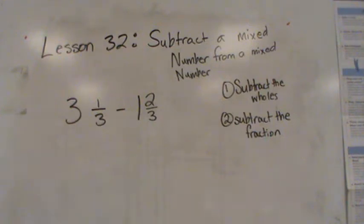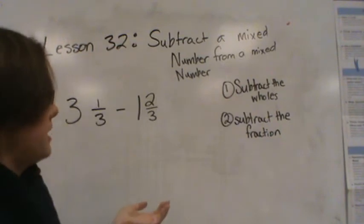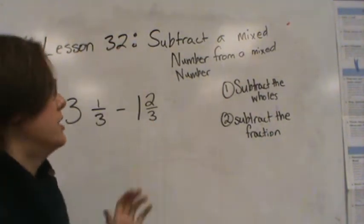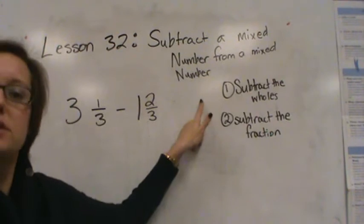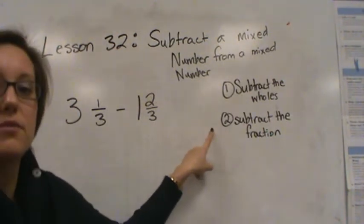Lesson 32, we are going to be subtracting a mixed number from a mixed number. And just like we added a mixed number and a mixed number, we had two steps. Well, we have the same two steps. We just use subtraction instead of addition. So the first thing that you're going to do is you're going to subtract the wholes, and then you're going to subtract the fraction.